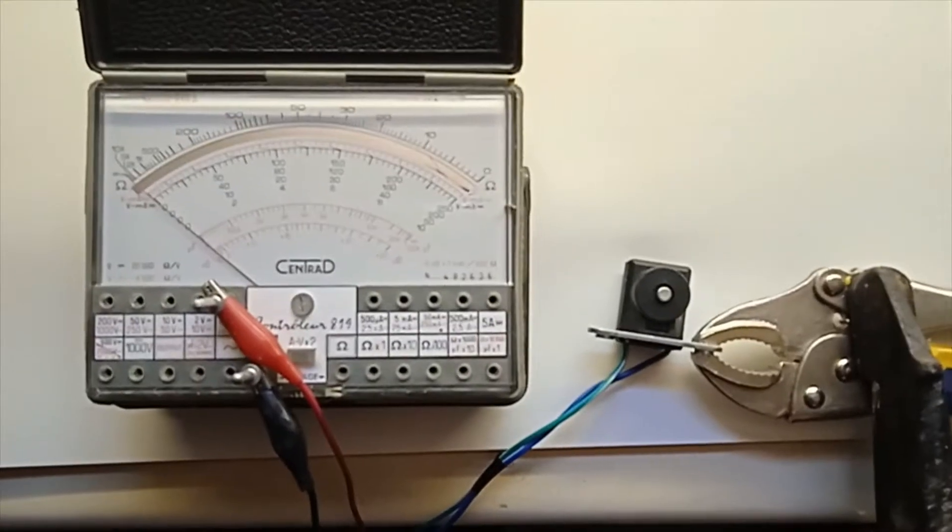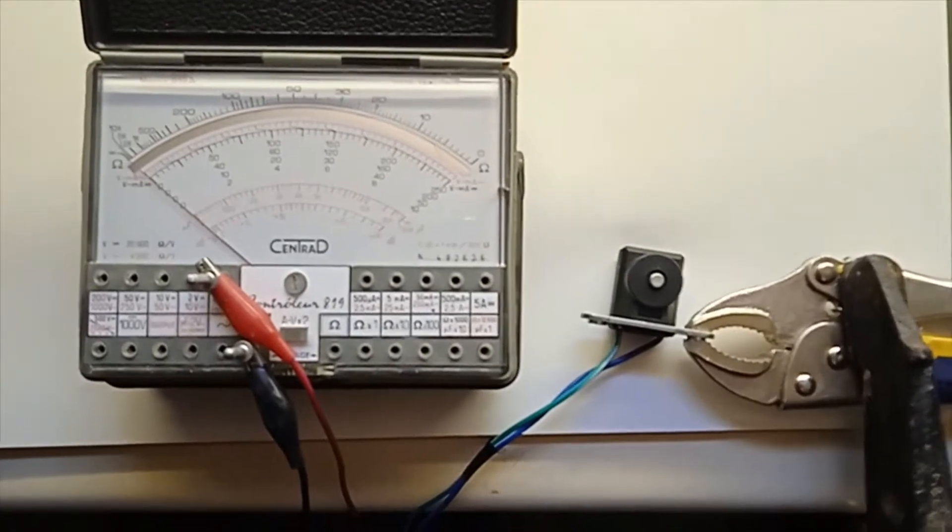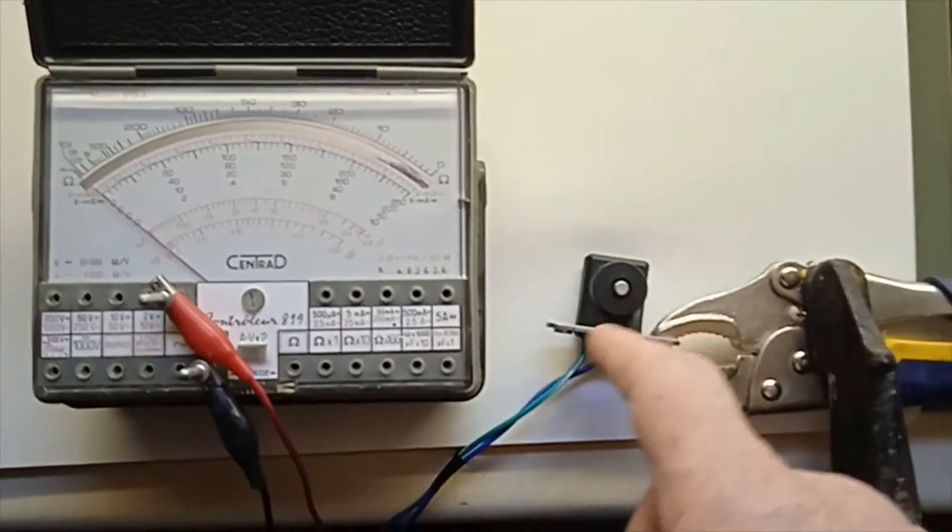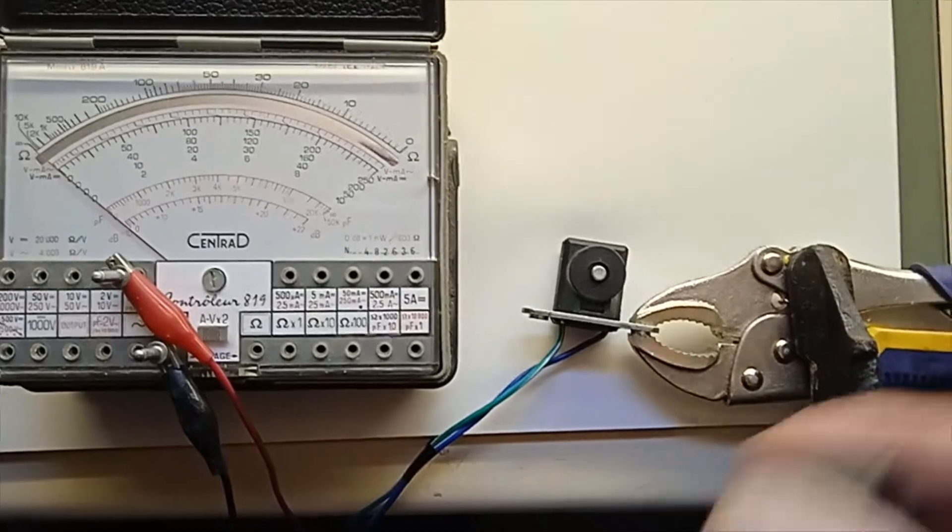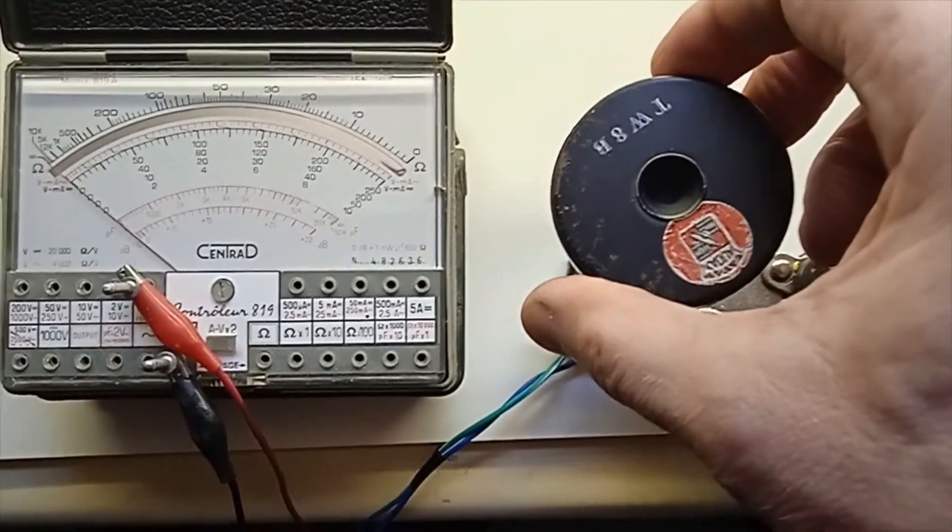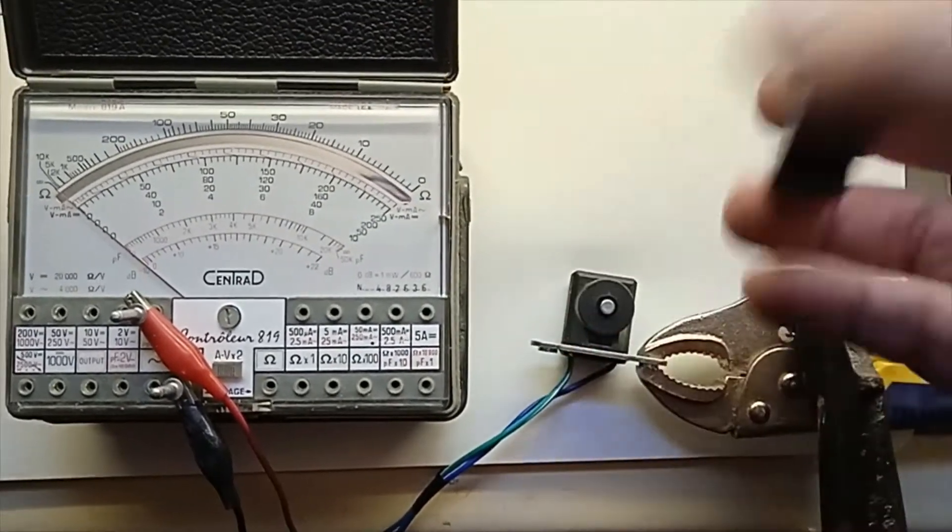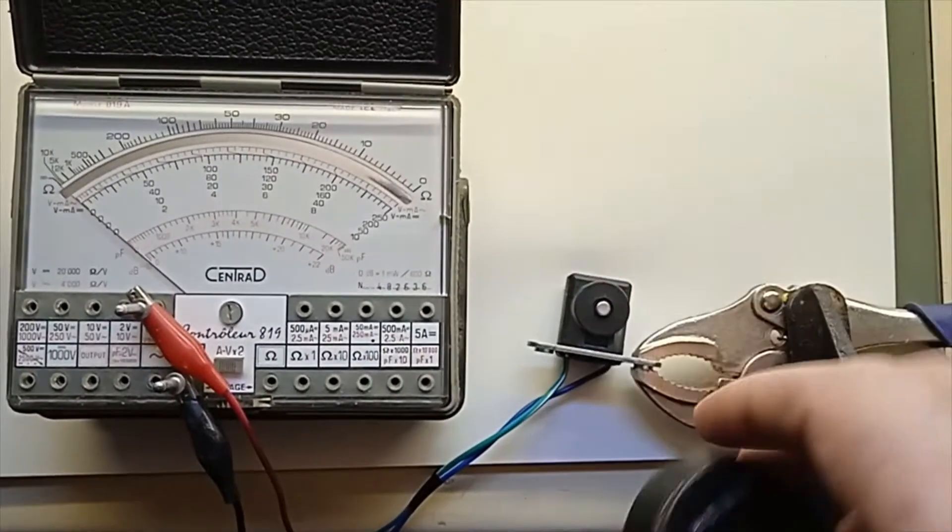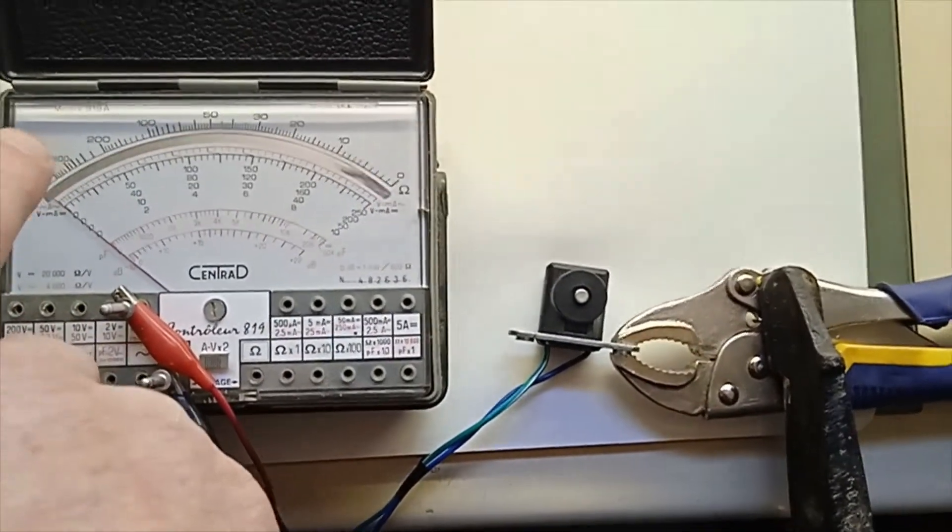Just want to show you how to know the polarity of a pickup when you don't have any oscilloscope. This pickup is connected to this old analog multimeter and I'm going to use an old magnet from a speaker. When I approach the magnet to the pickup, just notice if the needle goes to the negative way or the opposite on the positive.